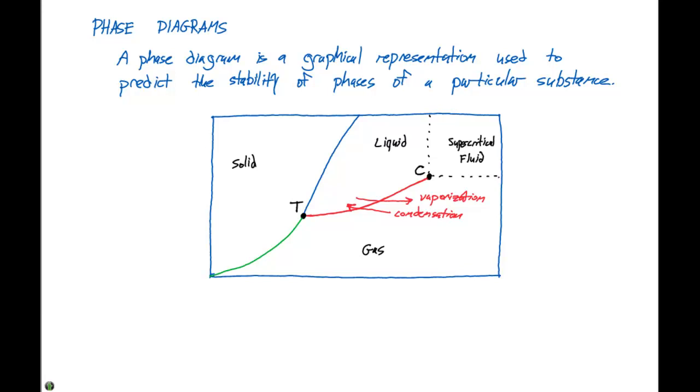Once we go past this critical point, the liquid and gas phases are indistinguishable. We call this the supercritical fluid region of our phase diagram because we're not able to tell whether we have a liquid or a gas at this point.